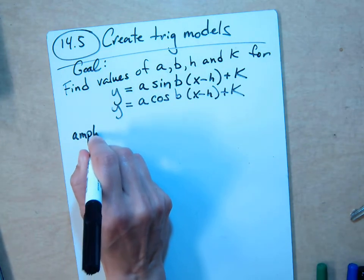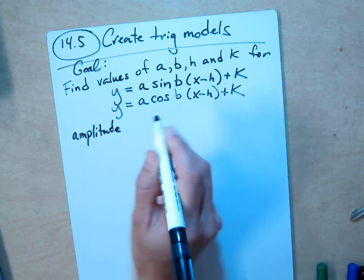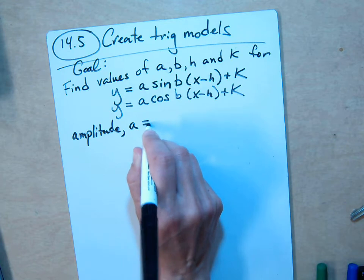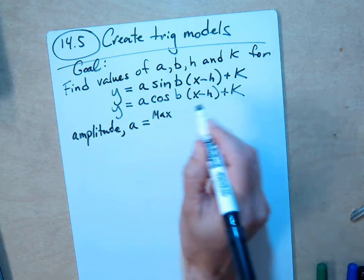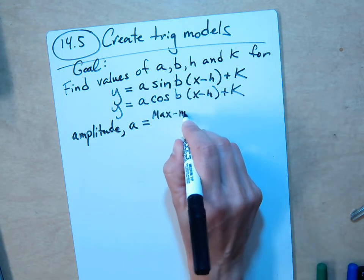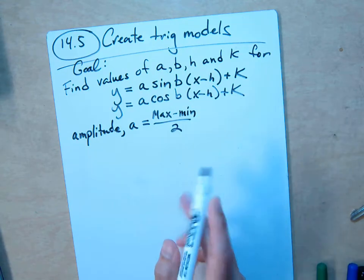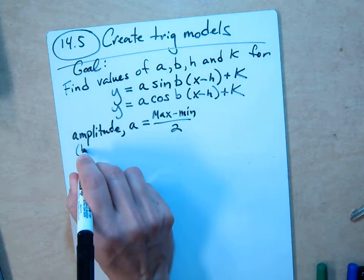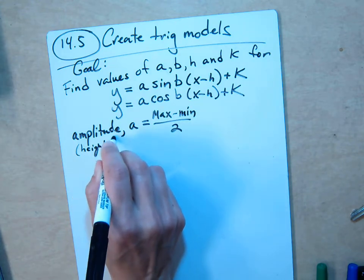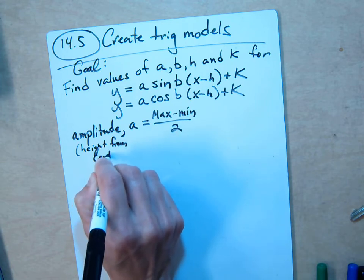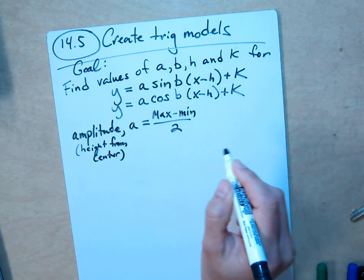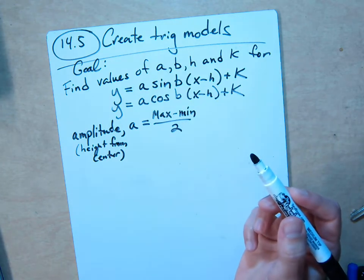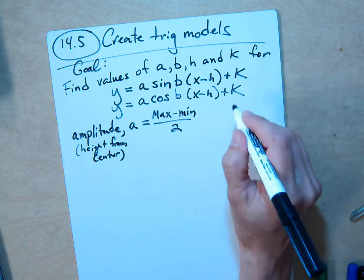The amplitude is based on the value of a, and it's basically, you'll take the maximum value from the graph or story, subtract the minimum, and divide by two because the amplitude is like the height of the wave from the center. And sometimes you don't even need the formula, you can just look at the graph.